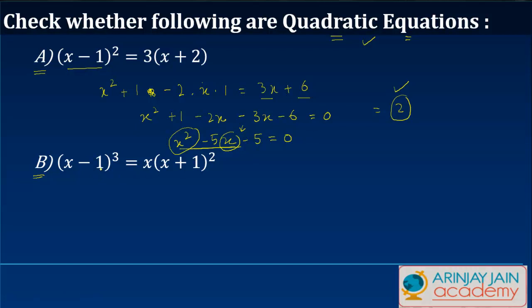Let's look at the second one. So you have x minus 1 cube is equal to x times x plus 1 whole square. Now a minus b whole cube is equal to what? It is equal to a cube x. So we will write this as x cube minus b cube. b is 1. So 1 cube will be 1 minus 3ab, 3 times x times 1 and then you have a minus b which is x minus 1 is equal to x times x plus 1 whole square is what? a square plus b square plus 2ab.